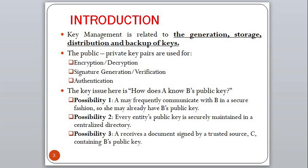Due to this drawback, the second possibility came into existence: every entity's public key is securely maintained in a centralized directory. If A needs B's public key, he queries the directory. But the drawback is scalability — the infrastructure to support this directory could become a bottleneck. So they came up with a third possibility where A receives a document signed by a trusted source C containing B's public key. We will explore this last possibility in greater detail in the next section after introducing digital certificates.